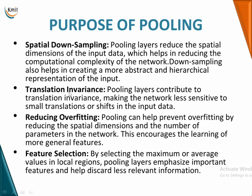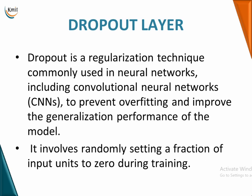Second, the pooling layer contributes to translational invariance, making the neural network less sensitive to small translations or shifts in the input data. Third, it helps reduce overfitting — by reducing spatial dimensions, you also reduce the number of parameters in the network, which prevents overfitting and encourages learning of more general features. Fourth, by selecting maximum or average values from local regions, it emphasizes important features and discards irrelevant ones, aiding feature selection.